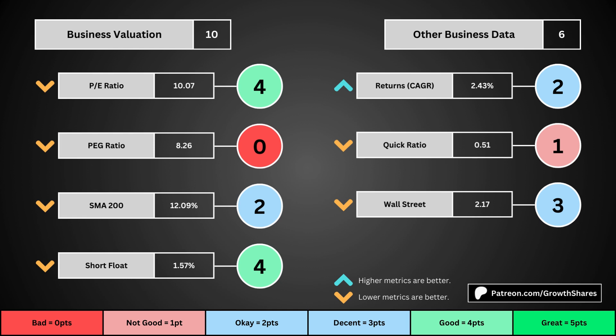For these four metrics, we want the values to be as low as possible — that will give us a higher point total within the bubbles. The fourth set of metrics looks into other relevant data. First is the stock's performance over a set period of time; usually it's 10 years, but if the stock doesn't go that far back, we go with the earliest data up to 10 years. The quick ratio is basically how easy it is for the business to pay off its short-term obligations — we want that high. And Wall Street is the average consensus rating Wall Street analysts give the stock, from a strong buy of 1 to a strong sell of 5. Again, the better values get a higher point total.